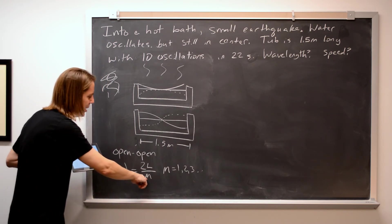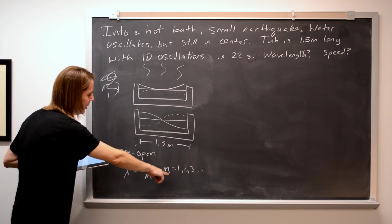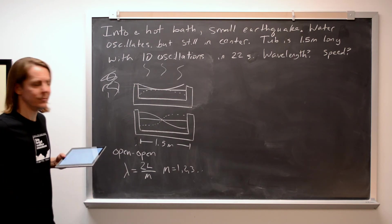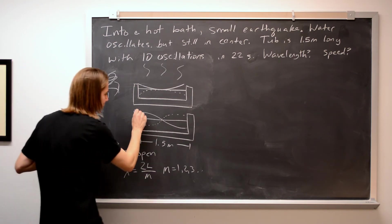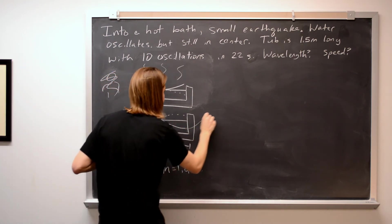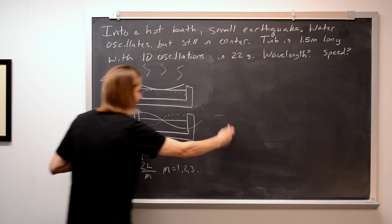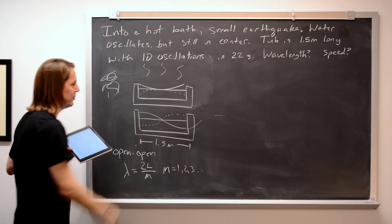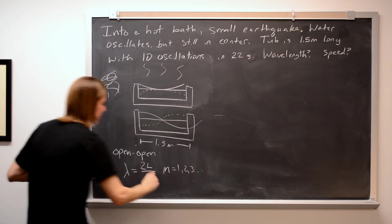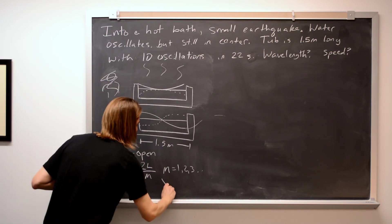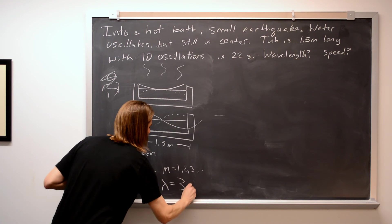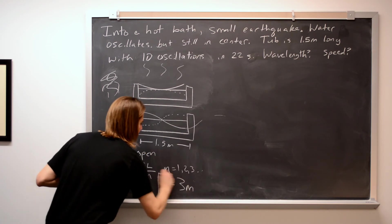If you say M equals 1, then the wavelength is simply 3 meters. You can also see that visually — this is half of a wave, and another 1.5 meters gives you the whole wave. So the wavelength is 3 meters.